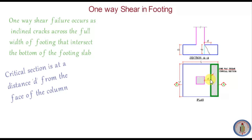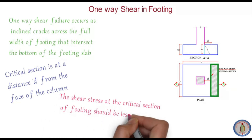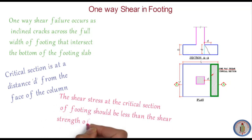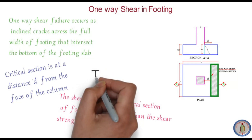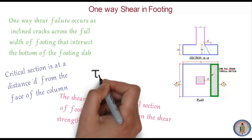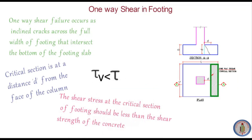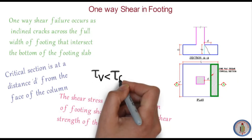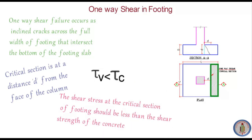As seen in the plan, at a distance d from the face of the column, this is the critical section for one-way shear, and we have to find the shear force for this section. The condition is that the shear stress at the critical section of the footing should be less than the shear strength of the concrete — that is the condition for one-way shear.